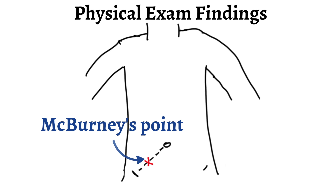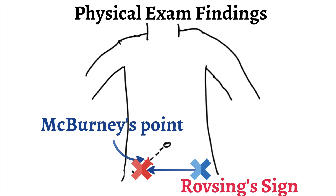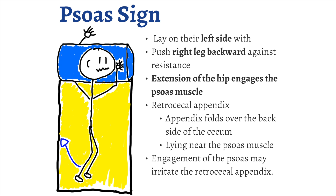There are three other signs you can elicit on physical exam. The first is Rovsing's sign, which is when you press the left lower quadrant but the patient feels right lower quadrant pain. The second sign is called the psoas sign. You ask the patient to lay on their left side with their right side up in the air, then push their right leg backward against resistance. The extension of the hip against resistance engages the psoas muscle. For those who have a retrocecal appendix, where the appendix folds over the backside of the cecum lying near the psoas muscle, engagement of the psoas may irritate the retrocecal appendix.